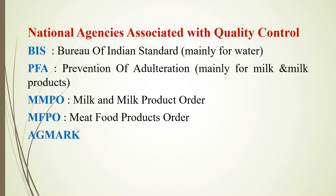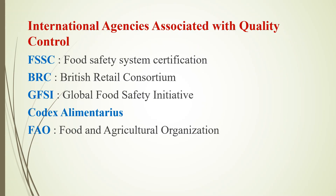Then MFPO — Meat Food Products Order — enacted in 1973. Then Ag Mark — Agriculture Mark — is applied to directly consumed products. Products must be qualified with Ag Mark standards to confirm they are free from adulteration.